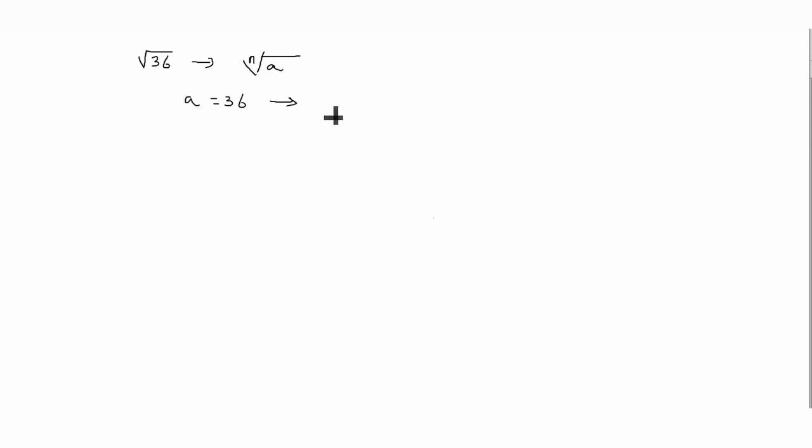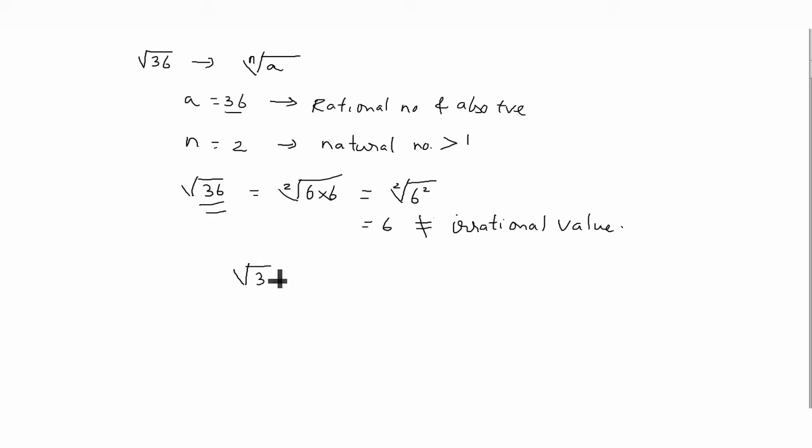Similarly, here a equals 36. In nth root of a, a is called the radicand, and here a equals 36, which is a rational number and also positive. N equals 2, which is a natural number, and n is greater than 1. So two conditions are satisfied. But the third condition: square root of 36 can be solved. 36 can be written as 6 squared, so root and square cancel. Square root of 36 equals 6, which is a rational number. Hence, although two conditions are satisfied, the last condition fails. Square root of 36 is not a surd.